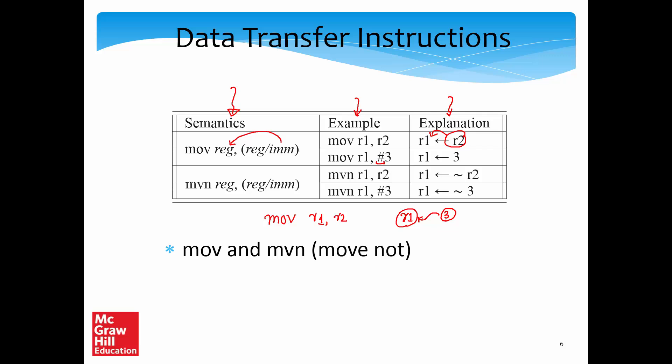MOVE has a variant called MVN, which is MOVE NOT. This is similar to the NOT instruction in Simple RISC. MVN R1, R2 transfers the one's complement — every single bit flipped — from R2 to R1. The tilde sign represents one's complement: for example, the one's complement of 1000 is 0111. So the MVN instruction is essentially the same as MOVE, but it moves the complement of the register or immediate.